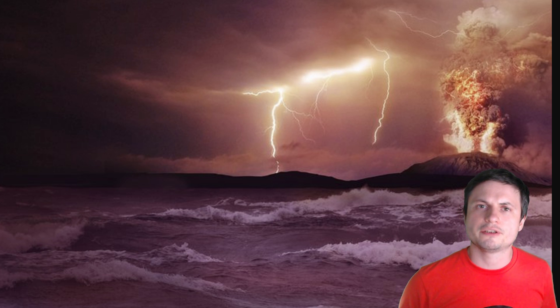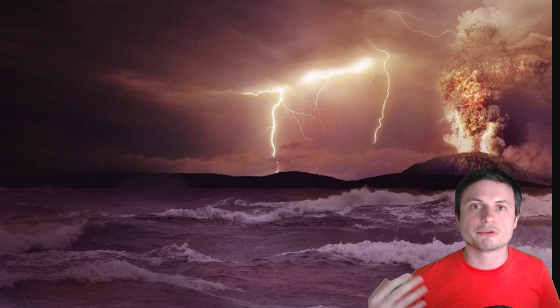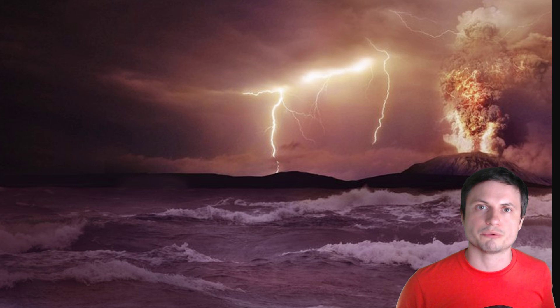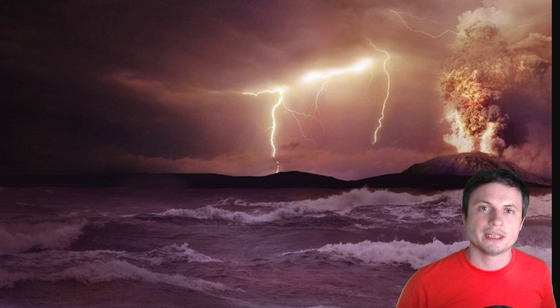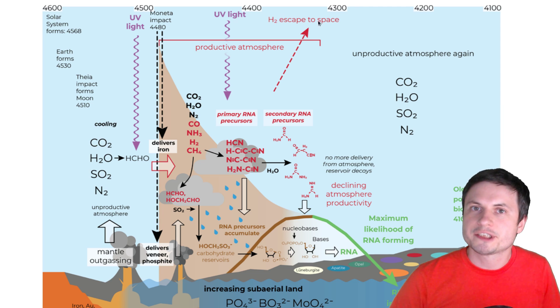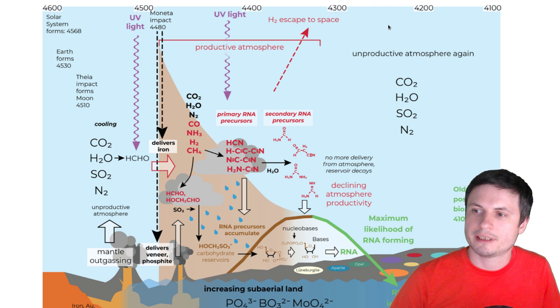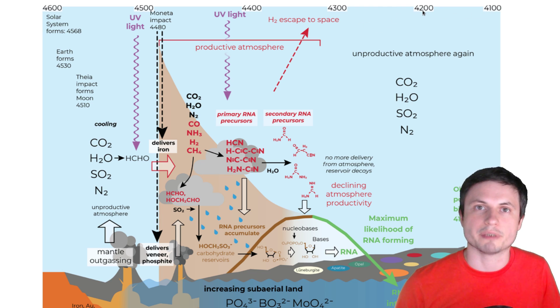They don't think all of this happened instantly. They believe it took about 120 million years for various materials to combine and create various chemical reactions before the first RNA was created here on the planet. Following this, it took about 200 million years of development before we get our first signs of actual bacterial life on the surface of the planet — all of this after the collision with the unusual object they refer to as Moneta.